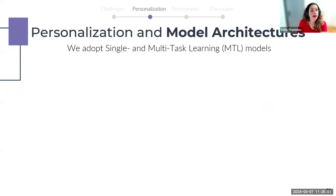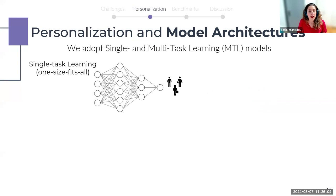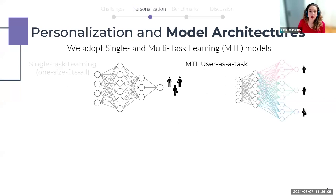Extending prior work on machine learning personalization by MIT Media Lab, we explore a continuum of personalization conceptualizations for the use case of stress detection. Using multitask learning, we develop the following models: first, a generic baseline single-task learning model that adopts a one-size-fits-all approach with one model for all users; next, a multitask learning model where each task is defined as an individual wearable user.